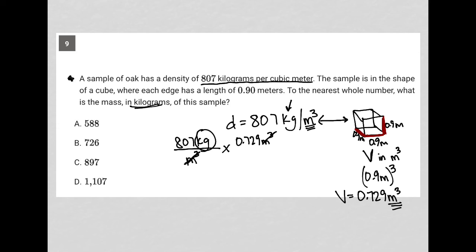So all that's left is to go to my calculator and multiply the values. So I have 807 times 0.729, and I get 588 as my answer. So choice A is the correct answer.